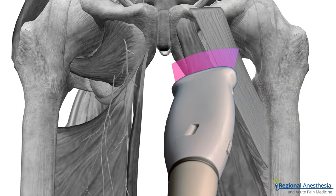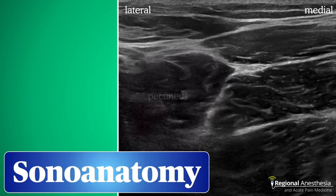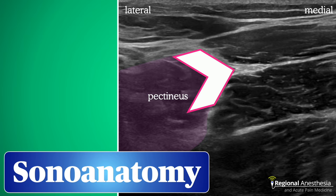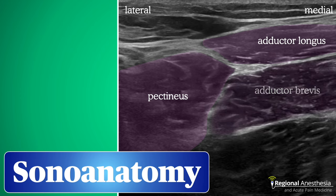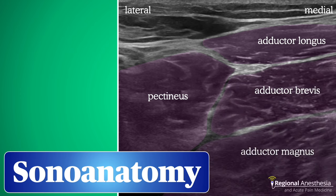If we put a linear ultrasound probe in the inguinal crease and scan medial to the femoral vessels, this is what we'd see. We have pectineus laterally with its characteristic chevron shape to its medial edge. Then we have a three-layer sandwich medial to that: adductor longus, brevis, and magnus. You can see nice clear fascial planes between them.